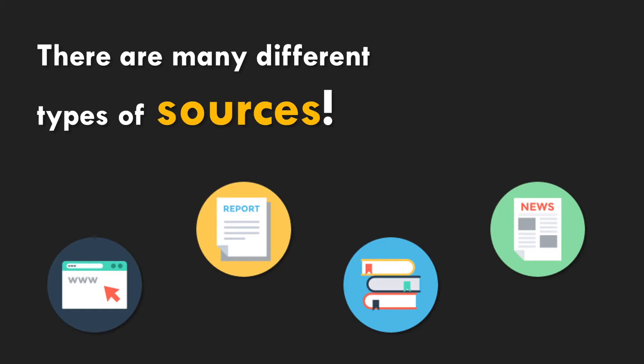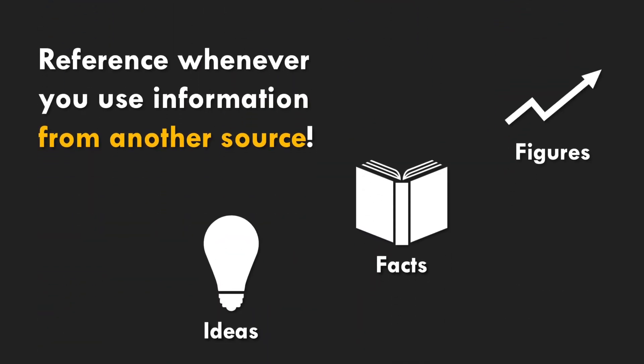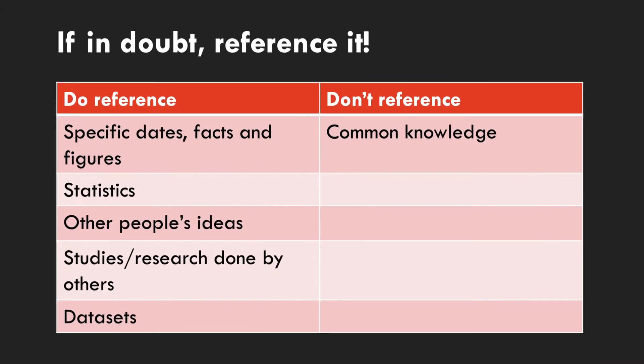Some of the most prominent sources are websites, reports, books, news, or academic journal articles — particularly when you're at university. It's really important to reference whenever you use information from another source. That means ideas, facts, or figures that you've drawn on other literature to inform your own thinking require a reference in your writing. If you're ever in doubt, it's safer to reference things than not to.